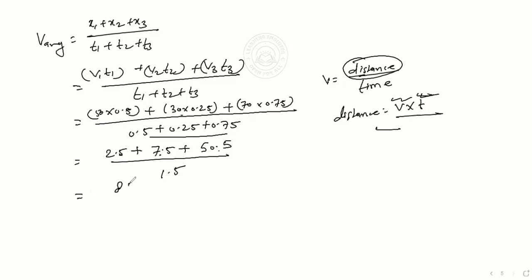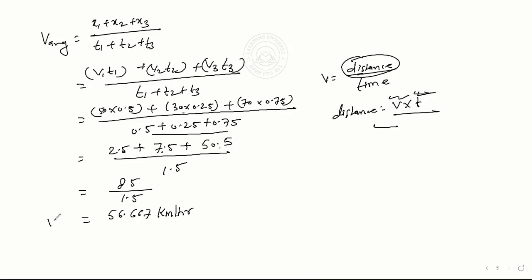Divide by 1.5. Now we have to solve. This will be 56.667 kilometer per hour. This is our answer: the average speed of the car.